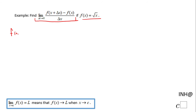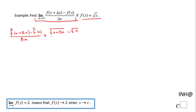So first thing I'm going to do is evaluate this expression. We're going to have here: square root of x plus delta x, minus square root of x, all over delta x.